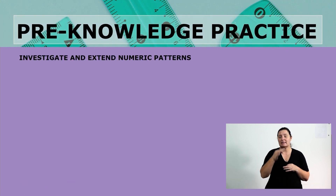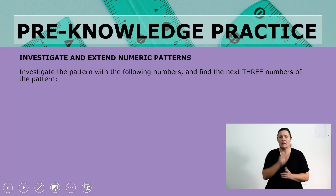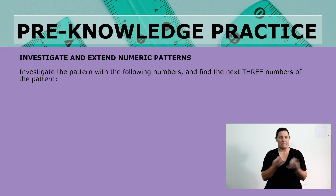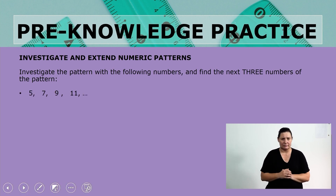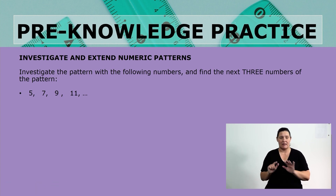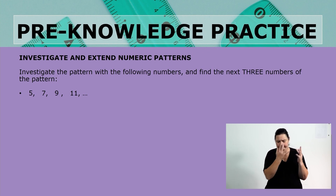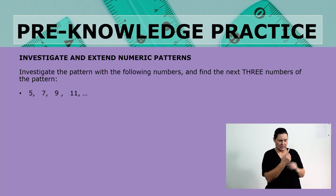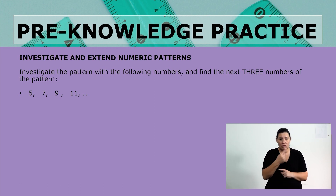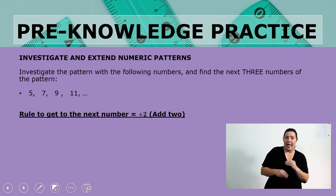Investigate and extend numeric patterns. Find the next three numbers of the pattern. Starting with the first pattern: 5, 7, 9, and 11. Look at the pattern and try to figure out how we move from the first number to the next number. If you said that we should add 2 every time, then you are correct.